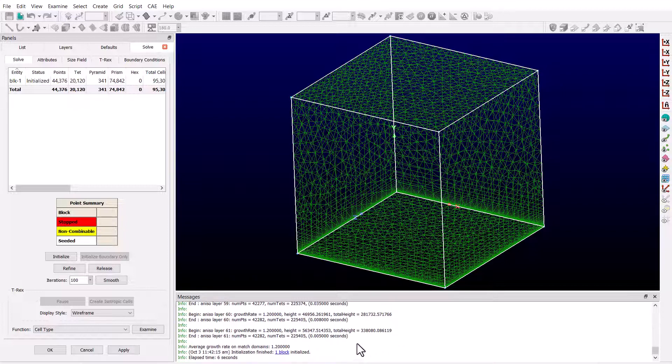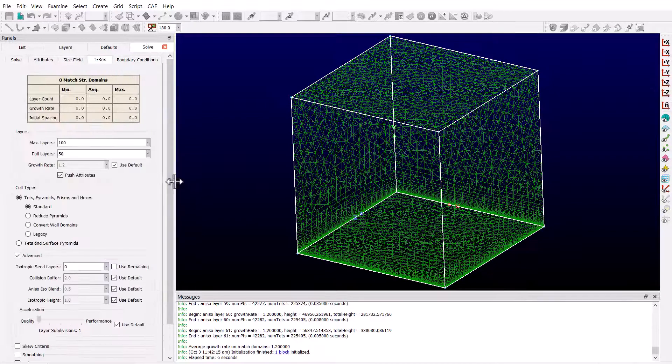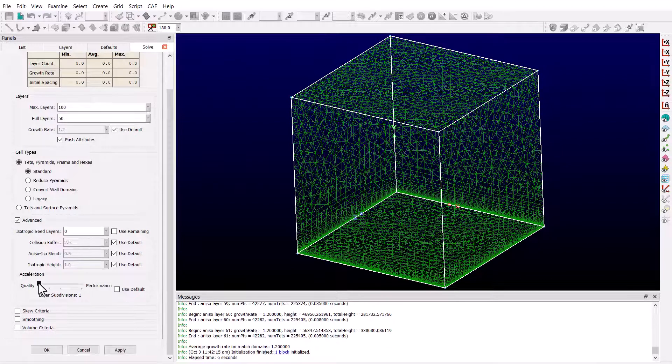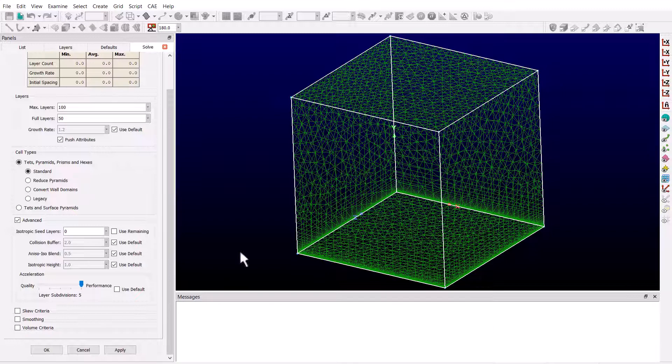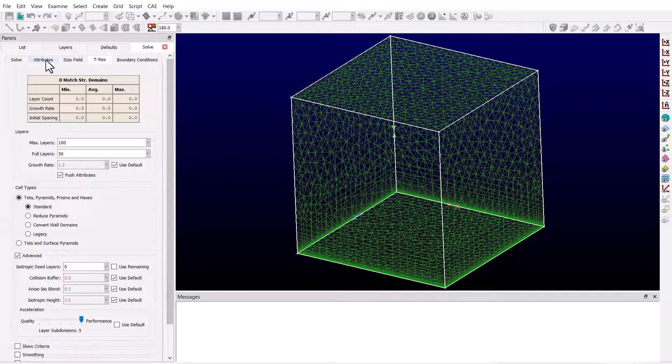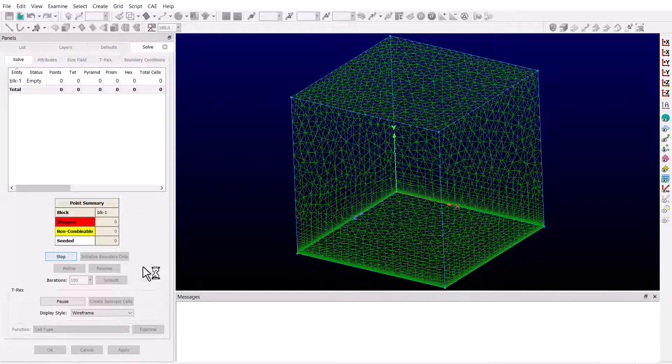And this is basically the normal or standard mode of operation for T-Rex. Now let's go back to the T-Rex tab and this time set the layer subdivisions to 5, which is the performance setting. Let me also clear the messages window first, and now go back to the solve tab and hit initialize again.